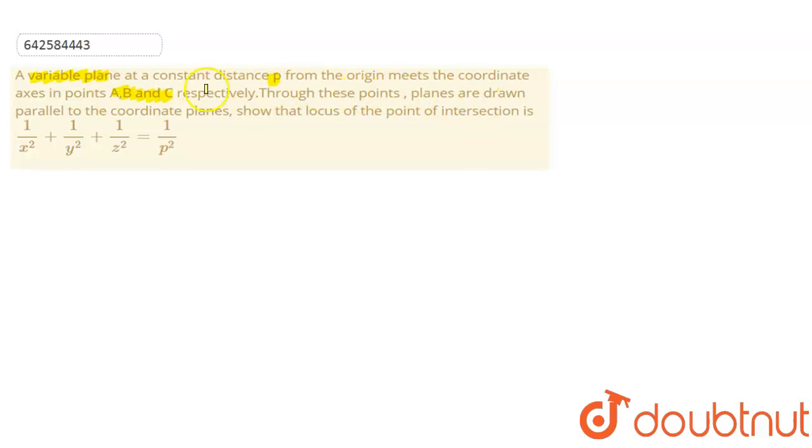Through these points, planes are drawn parallel to the coordinate planes. Show that the locus of the point of intersection is 1 upon x square plus 1 upon y square plus 1 upon z square is equal to 1 upon p square.